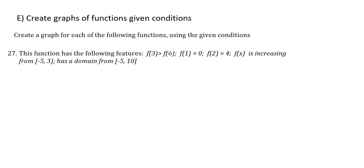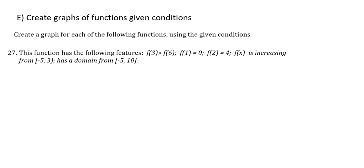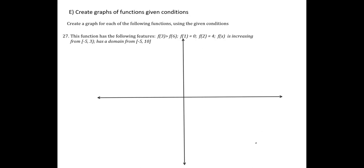And then finally, our last objective is to create graphs of functions given conditions. So we're asked to graph a function that has the following features, and I'm going to start with the domain because the domain is most important for being able to know how to graph this function. The domain is from negative 5 to 10, so I'll make halfway be 5, all the way be 10, which means this is negative 5, negative 10 on my scale. So I know this function is going to cover from negative 5 over to 10 based on the domain.